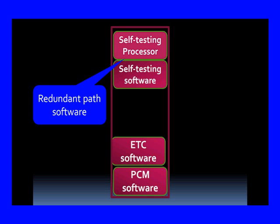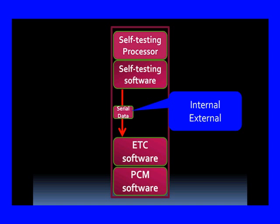Regardless of which system you have, you're going to have redundant path software. We've got a self-testing processor that is continuously looking at the signals to make sure everything is what it should be. We'll talk about how it analyzes the signal. We've also got self-testing software, and it's going to send data through a serial link — internal if it's in the PCM, external if it's an external system — over to the ETC software that resides in the PCM. Inside the PCM, we're going to have both the ETC software and the PCM software.